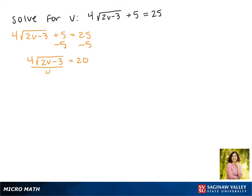Again, we want to get the square root by itself, so we divide both sides by 4. The square root of 2v minus 3 equals 5.